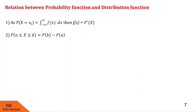An important relation states that the probability of X between a and b equals the cumulative distribution function F(b) minus F(a). We are going to use this relation between the probability function and the cumulative distribution function, as well as the definitions of PDFs and CDFs for discrete and continuous random variables, to solve examples in the next video.